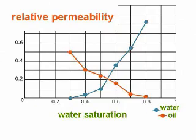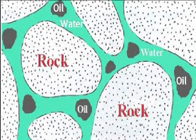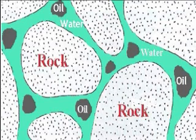Number four: relative permeability. When you mix oil, water, and gas in a reservoir rock, they remain in separate phases and will flow through the reservoir channels at different rates.